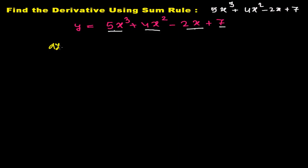The derivative of y with respect to x is now derivative of this 5x cube and then plus derivative of this 4x square and then minus and then again derivative of this 2x.